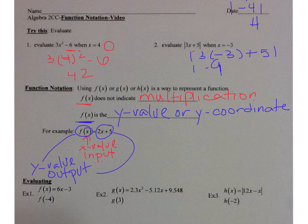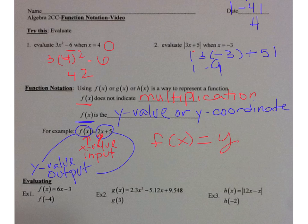When you plug in your x value into the equation and evaluate, 2x plus 5 gives you your y value. So f of x is equal to y — you have an x value (input) and a y value (output).